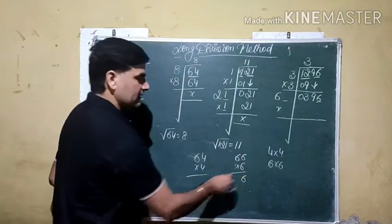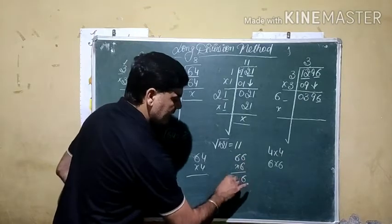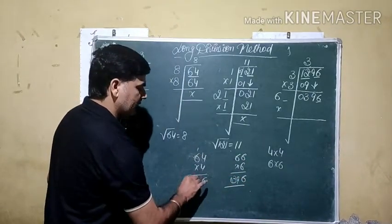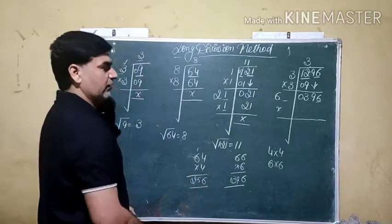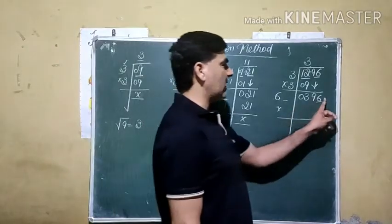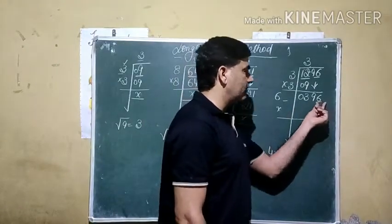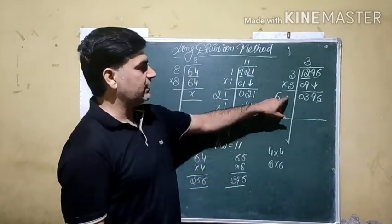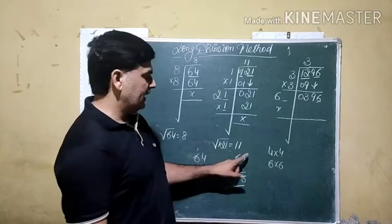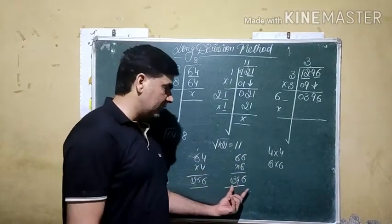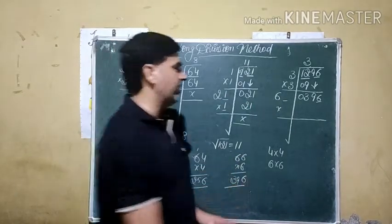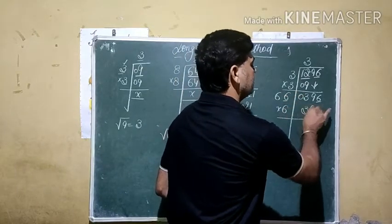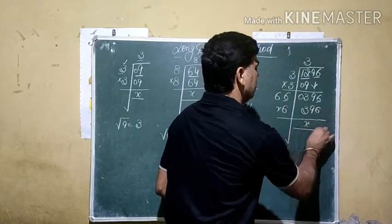It becomes 6. It is 36. 3 carry. 6 times 6 is 36 and 3, 39. 4 times 4 is 16. 1 carry. 24 and 1, 25. Like this we can identify with the help of last digit. Square root of which number gives us 6. There are 2 possibilities. 4 and 6. So we replace here 4 one time. Then we try for 6. If you see here we get 6 as an accurate pair. So we replace this value by 6. It gives us 396. Remainder should be 0.